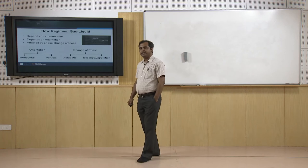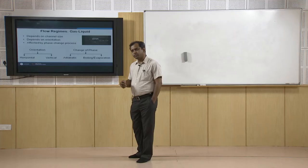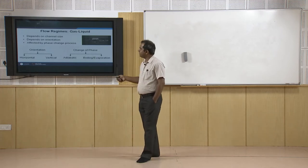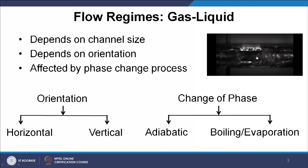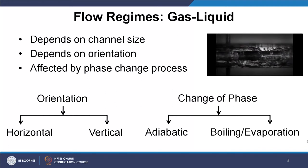Let us quickly see different flow regimes in gas-liquid two-phase flow, as the first few lectures will focus only on this. Different flow patterns or regimes depend on channel size, the orientation of the channel — whether vertical or horizontal — and whether there is phase change. In case of orientation, we consider horizontal and vertical positions. In case of phase change, we consider adiabatic conditions or boiling and evaporation. A typical video shows many different interfacial structures, from small bubbles to large chunks of bubbles observed during the phase change process.